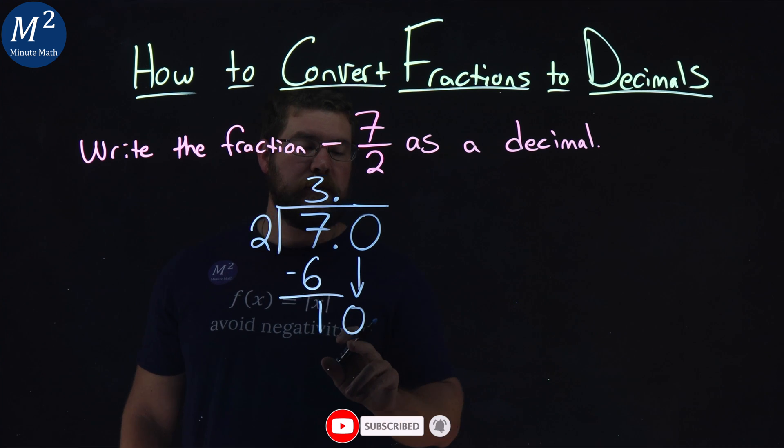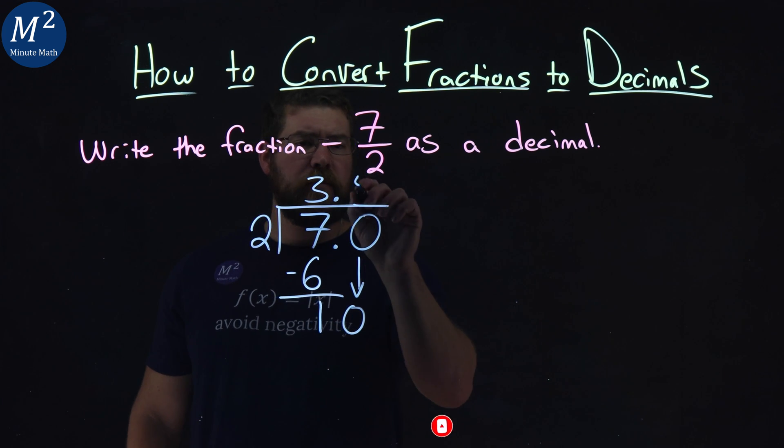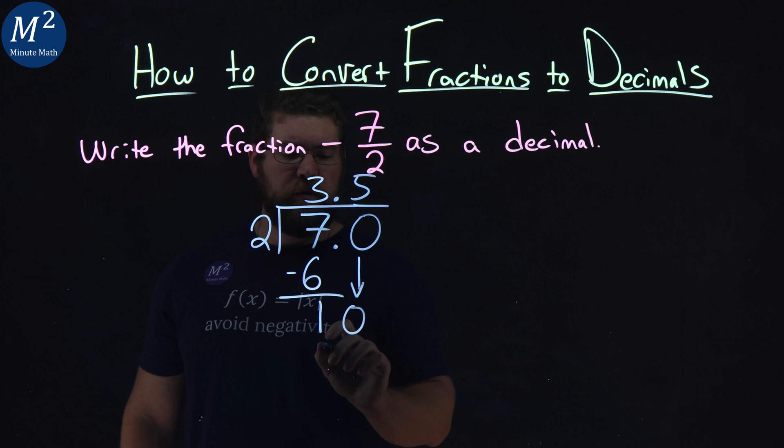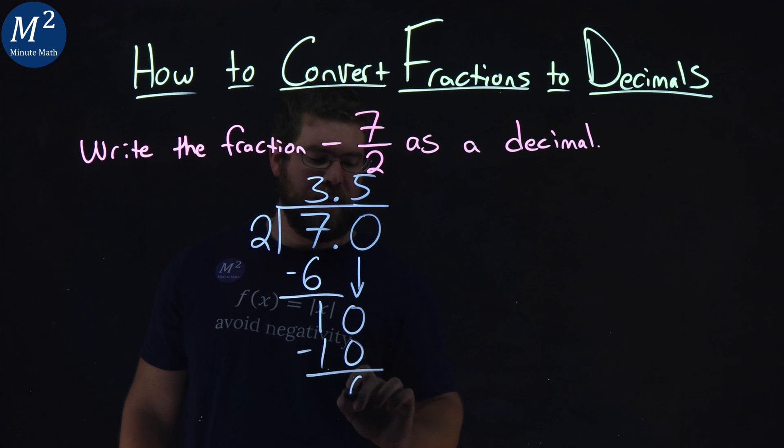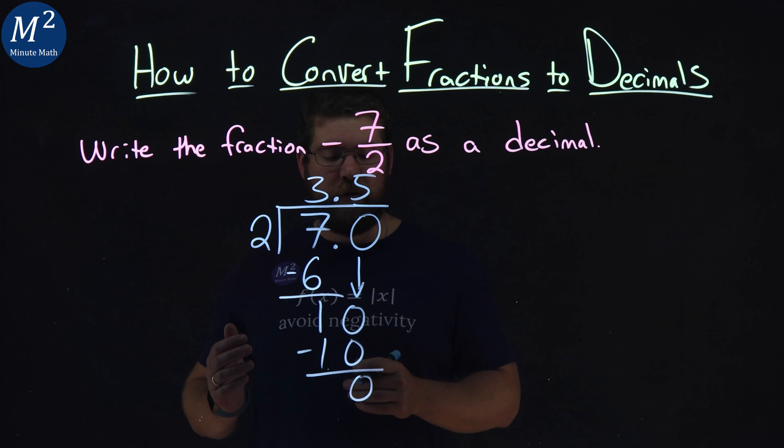Does 2 go into 10 now? And it does, five times. 5 times 2 is 10. We subtract the two numbers, we get a 0, and we're done. We don't have to go any farther here.